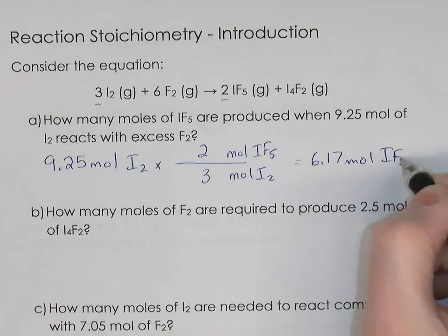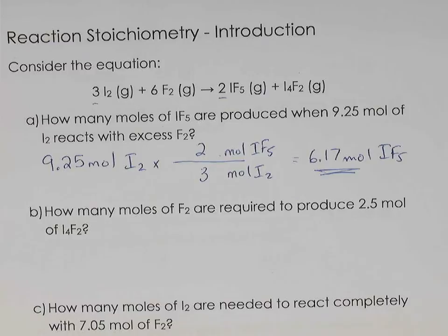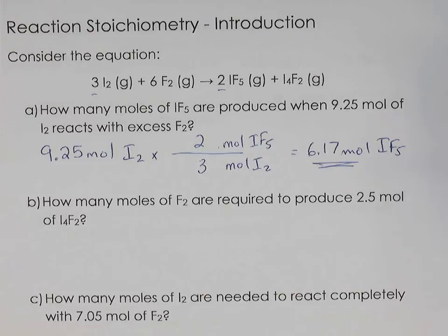From a significant digits perspective, the coefficients in a balanced equation are considered exact numbers — they have an infinite number of significant digits. So we don't round off our answers based on the coefficients.